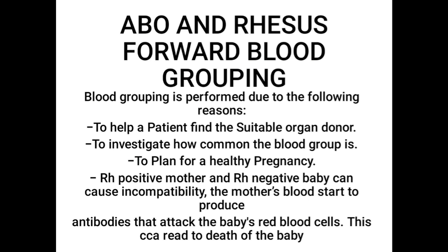There are several reasons why blood grouping has to be done. The first reason is to help a patient find a suitable donor for an organ transplant. Before an organ transplant, the blood group of both the patient and the donor has to be identified. Blood grouping is also used to investigate how common a particular blood group is — this is for research purposes.